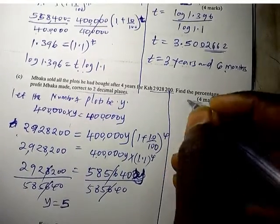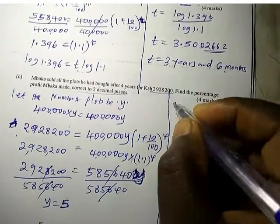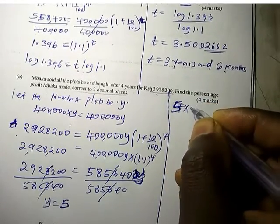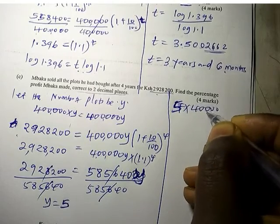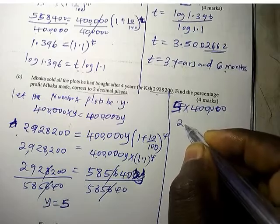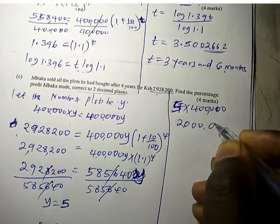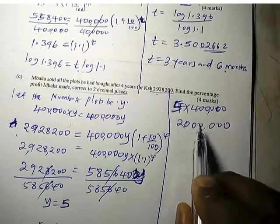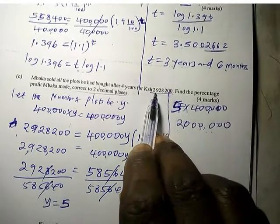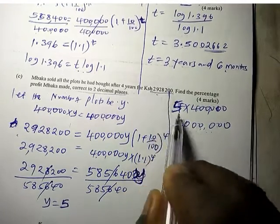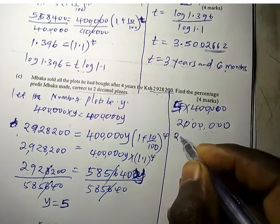The number of plots were 5. If 1 is 400,000, then 5 times 400,000 gives us 2 million. This is the amount he spent buying the plots. We can now get the profit.